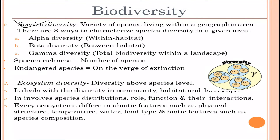Moving on, the second level is species diversity, which is the variety of species living within a geographic region. There can be different sorts of species, genes, or combinations of species and genes that may live in a particular region.